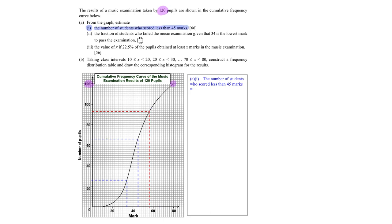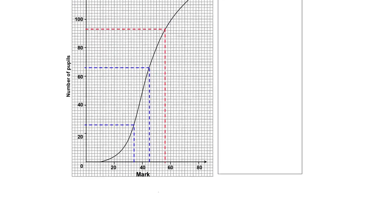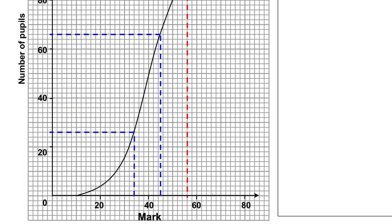Less than is pretty straightforward — in a cumulative frequency table each point denotes 'less than.' So for example, for 45 marks, I'm going to zoom in to the cumulative frequency curve here. 45 marks is at this point, so if you follow across, this will reach a corresponding value on the curve.